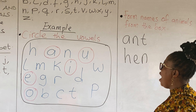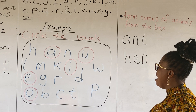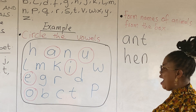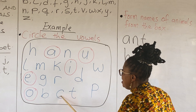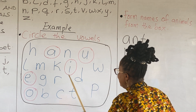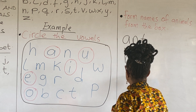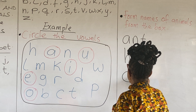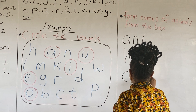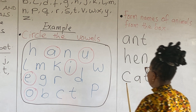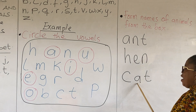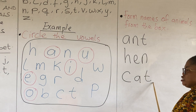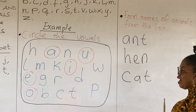Let's look for another name of an animal. We have C, A, T — cat. C, A, T. That is consonant, vowel, consonant. Cat.